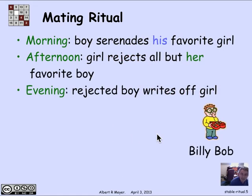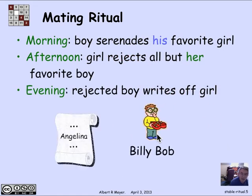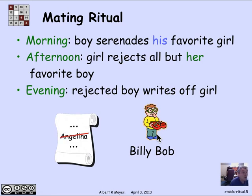And then in the evening, a rejected boy crosses off the girl who rejected him. So Billy Bob is going to cross Angelina off his list. And then the whole ritual is going to repeat starting the next morning, except that now Billy Bob will have a different woman at the top of his list because Angelina is gone forever.